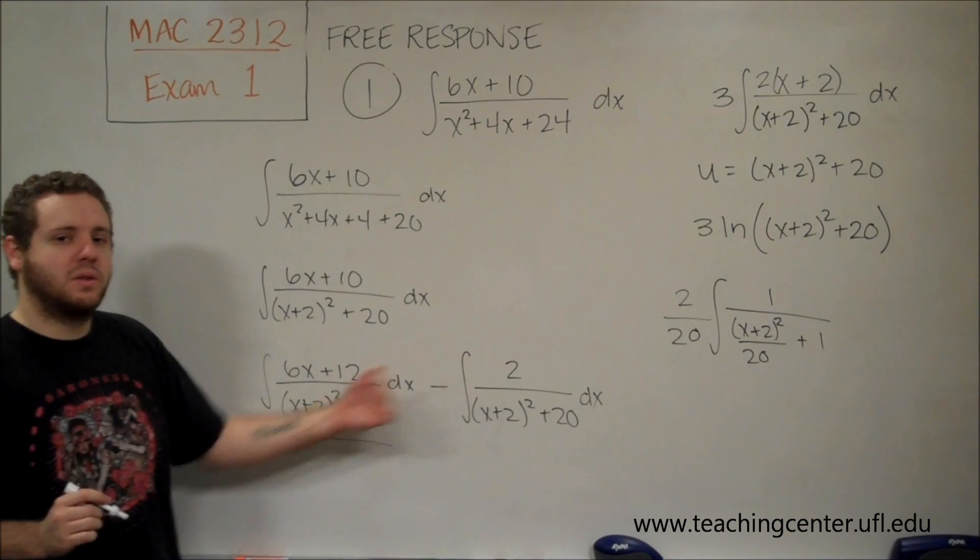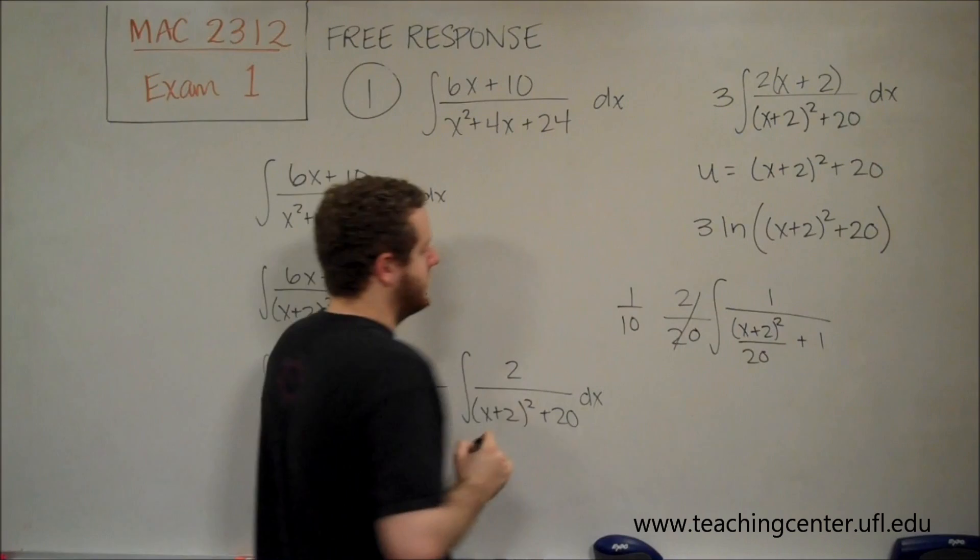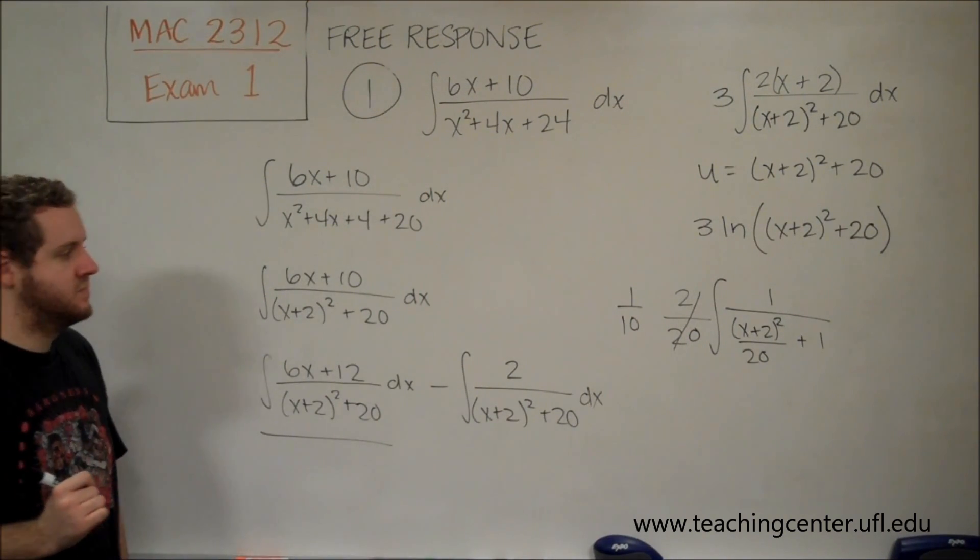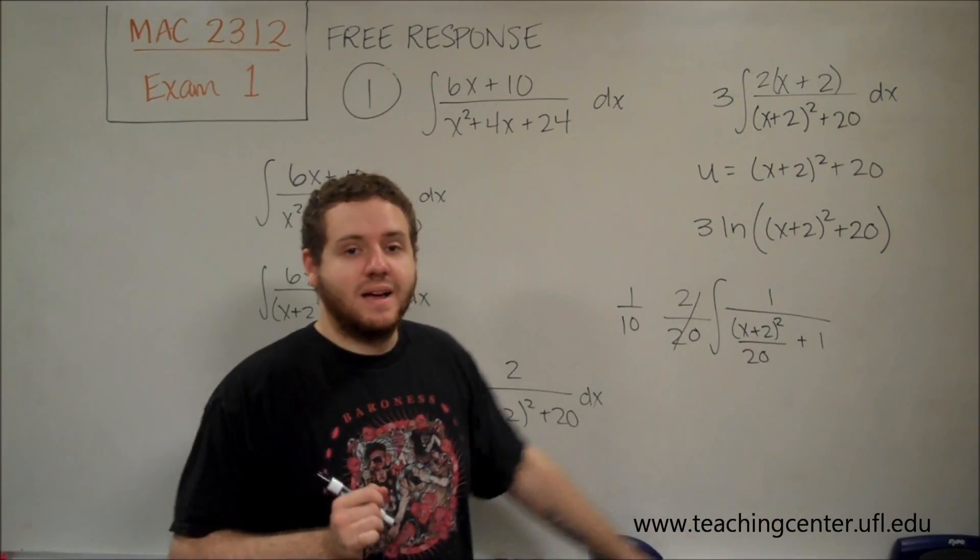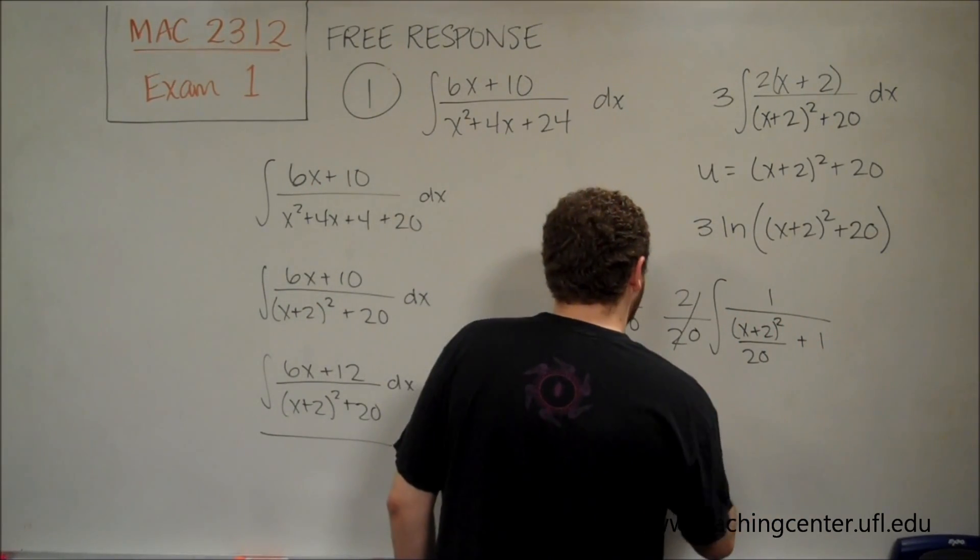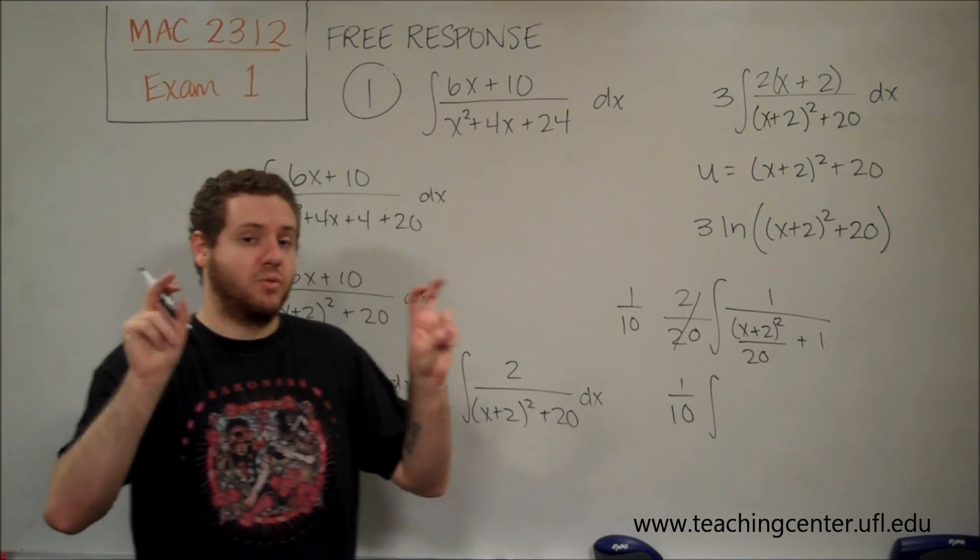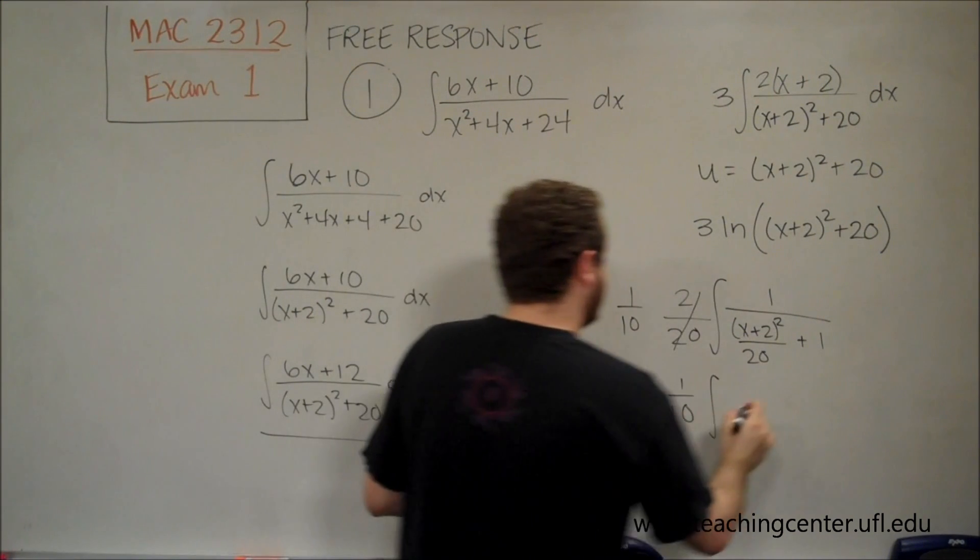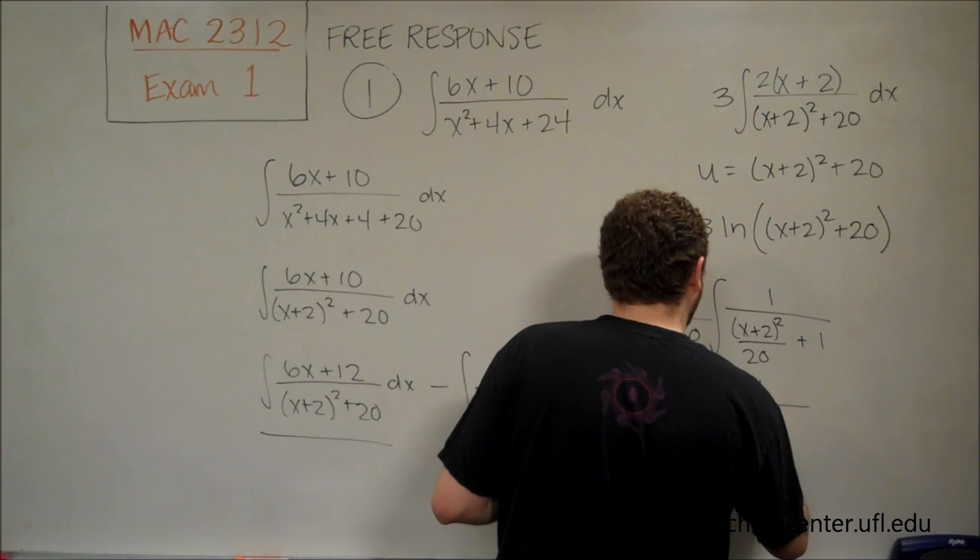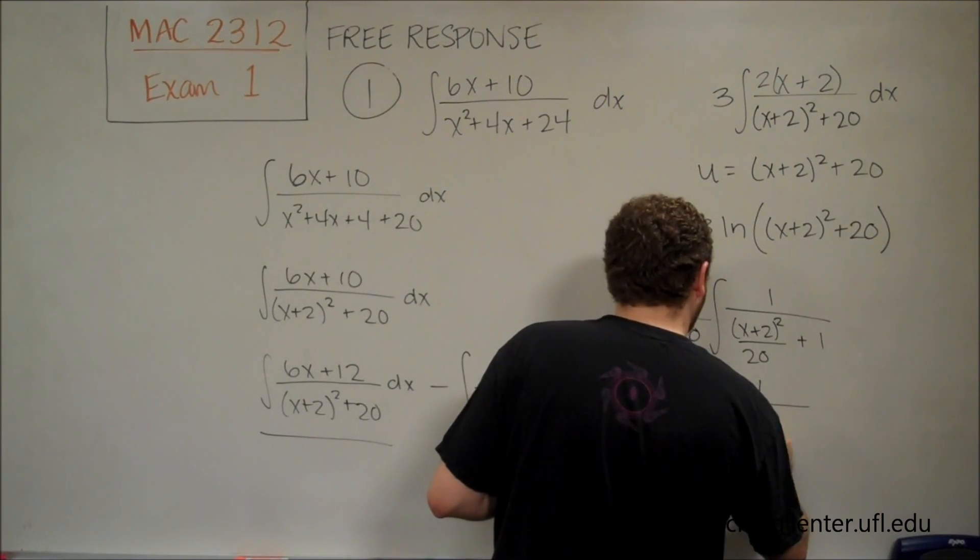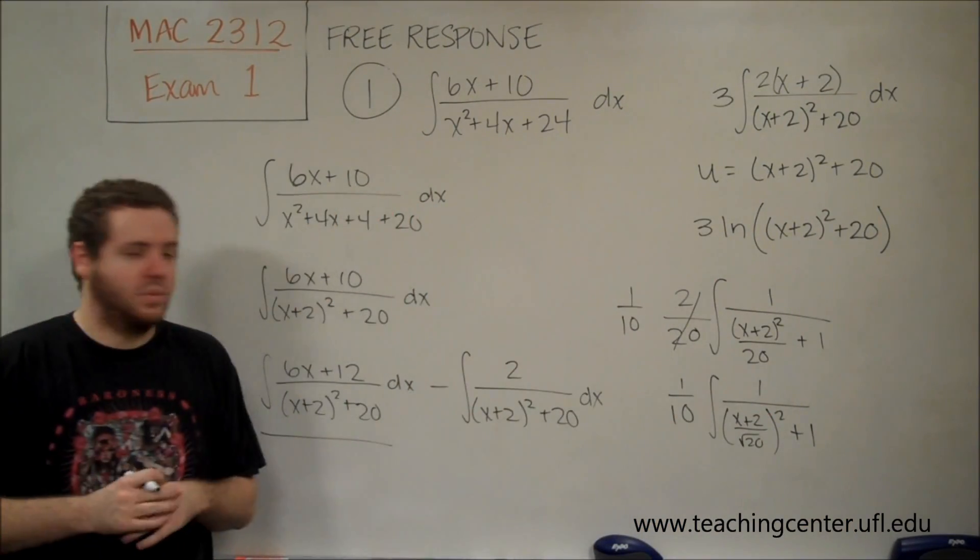So what we're going to end up with here is x plus 2 squared over 20 plus 1. So that's taking 2 out of the numerator, 20 out of the denominator. Of course, this is 1 tenth. So you can see here, this is looking pretty much exactly like arctangent. The last thing we might want to do just to make this a little more, even more like your typical formula that you remembered, or that you should have memorized,